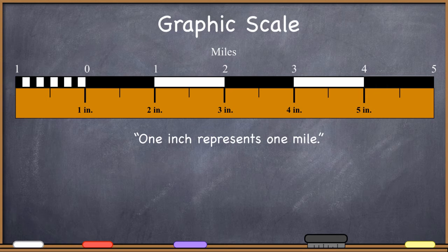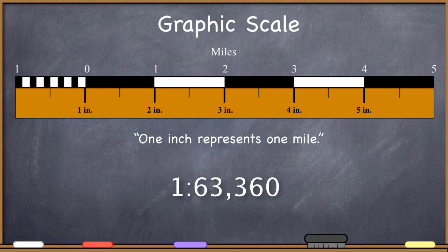And I hope that you would also see then that the representative fraction of this particular graphic scale would be one to sixty-three thousand, three hundred and sixty, because there are sixty-three thousand, three hundred and sixty inches in a mile. So we could create a representative fraction from this graphic scale, also a verbal scale, and we can always transfer back and forth between all of them.